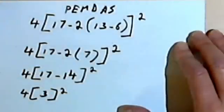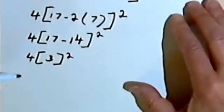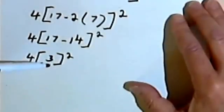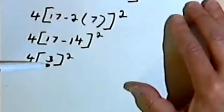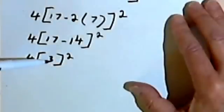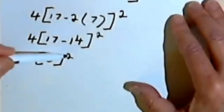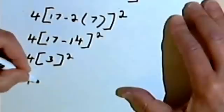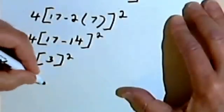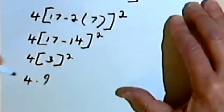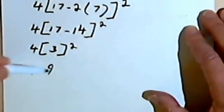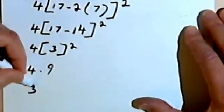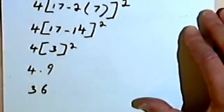That's going to be squared. I can't do anything inside the parentheses now, so my next step is to go on to the exponent. I'll take the 3 and square it, giving 3² = 9. So I have 4 times 9. Now the only thing I have left is multiplication, so 4 times 9 is 36.